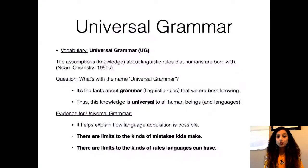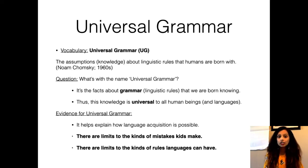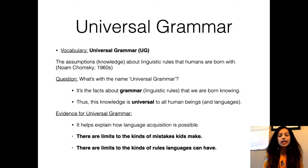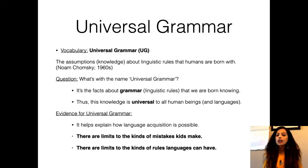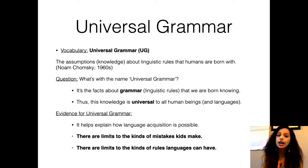Hi and welcome to week six of English Linguistics 315. We are continuing today with the module on child language acquisition. The last concept we talked about in last week's lecture was universal grammar, with respect to the fundamental question we have been interested in throughout the semester: how does a child actually figure out the first language? One of the answers we discussed was universal grammar.